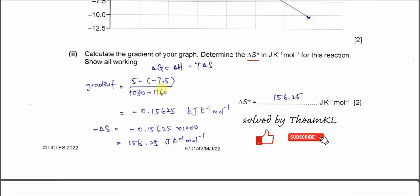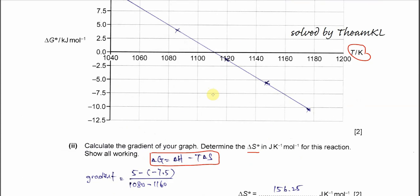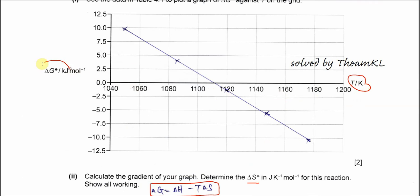Now for the gradient, after we use delta y over delta x, you will get a value close to this. The gradient is approximately negative 0.156 or negative 0.16 joule per kelvin per mole. From the Gibbs equation — delta G = delta H minus T·delta S — since this graph is Gibbs versus temperature,